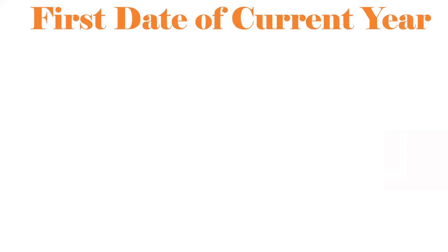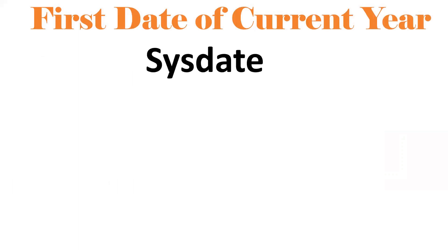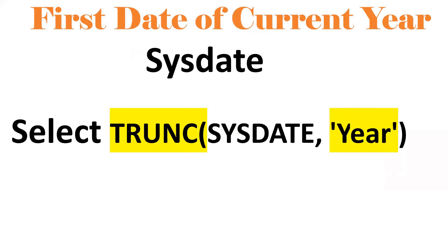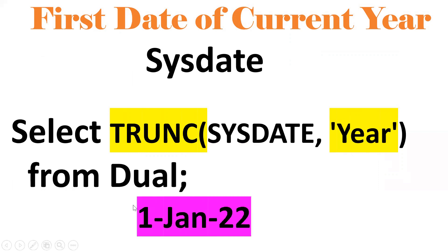If I want to get the first day of the current year — like January 1st, 2022 — I use TRUNC(SYSDATE, 'YEAR'). If I put 'YEAR', it gives the first day of the current year. If I put 'MONTH', it gives the first day of the current month. If I put 'DD', it gives the current date — today's date.